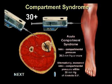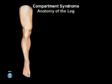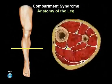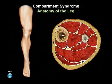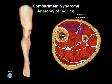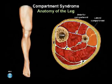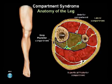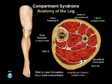Without urgent decompression, tissue ischemia, necrosis, and functional impairment will occur. Anatomy is crucial in the treatment of compartment syndrome. The four compartments of the leg include the anterior, the lateral, the superficial posterior, and the deep posterior compartments.